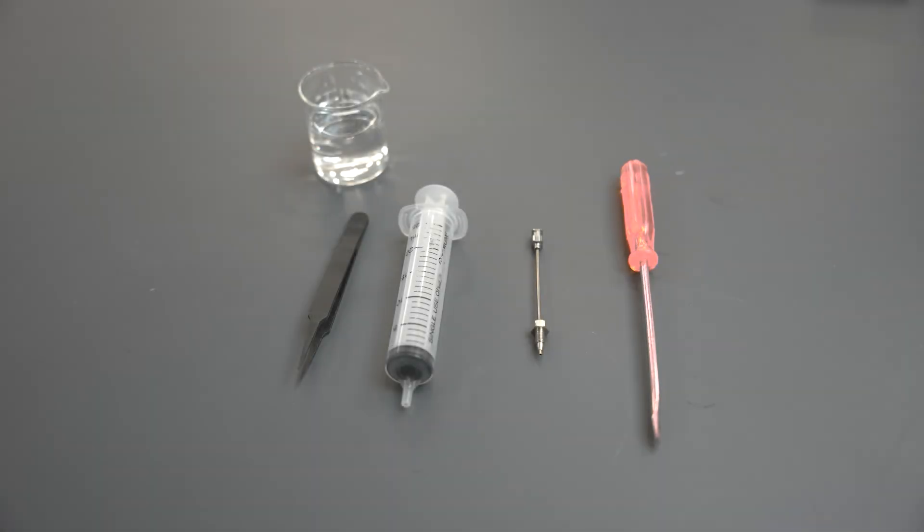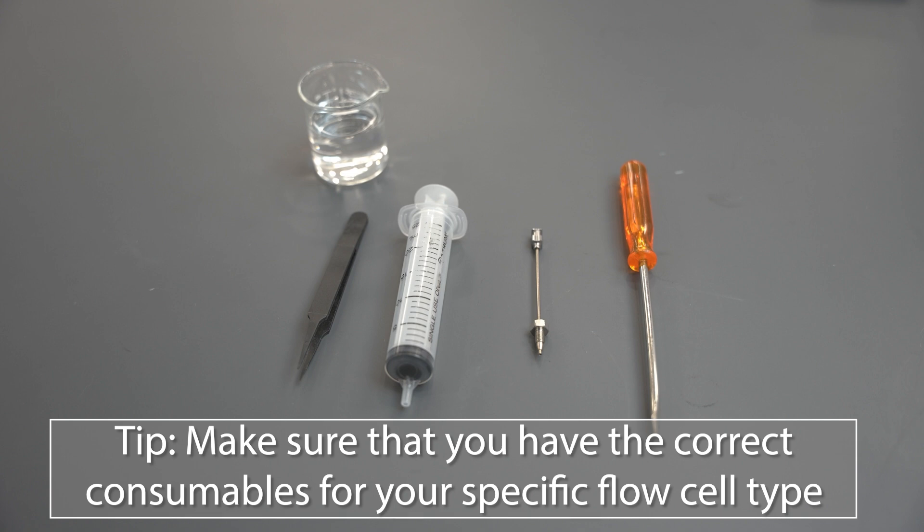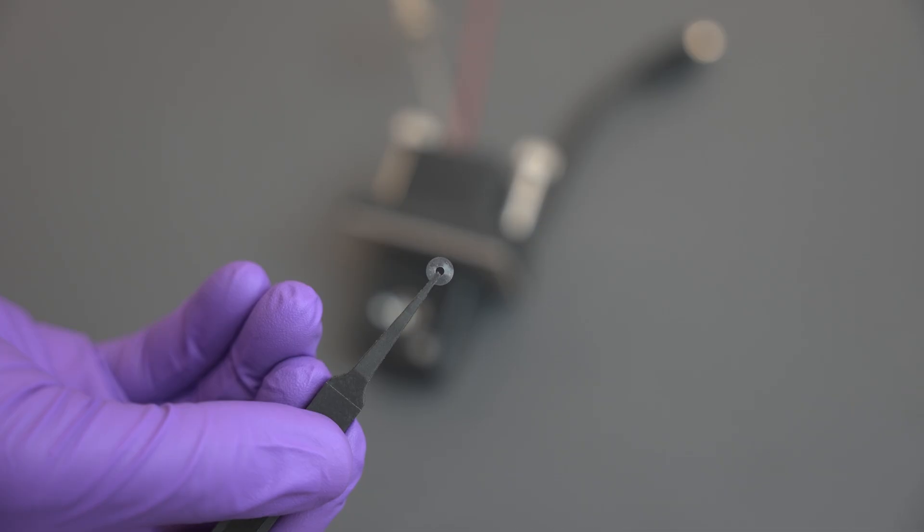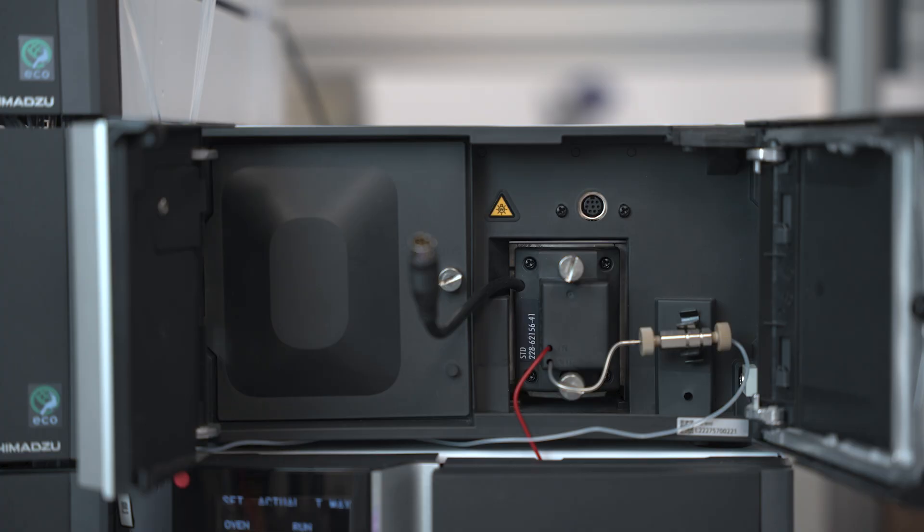For this procedure, you will need a flathead screwdriver, plastic tweezers, a syringe that has a needle with a nut and ferrule, 2-propanol, and replacement lenses and gaskets. Make sure that you have the correct consumables for your specific flow cell type. Please note that there are two gaskets that come with the applicable part number. Confirm that you see both gaskets in the bag before opening it.